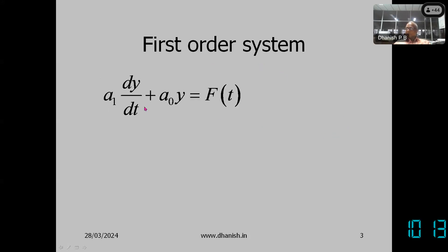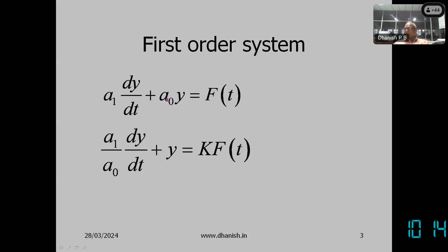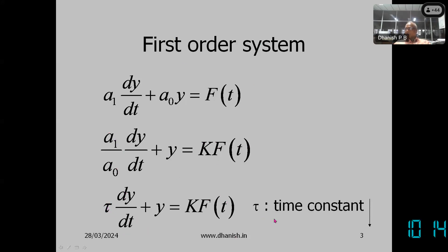A first order system is represented by the differential equation. For a zero order system we had only two terms, but now we have one more term on the left side: a1 dy/dt plus a0·y equals f(t). Dividing throughout by a0, we get (a1/a0) dy/dt plus y equals k·f(t). We call a1/a0 by the name tau, so: tau dy/dt plus y equals k·f(t). This is the differential equation of the first order system, where tau is the time constant.